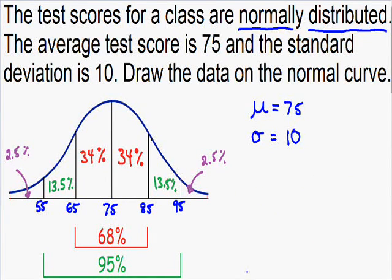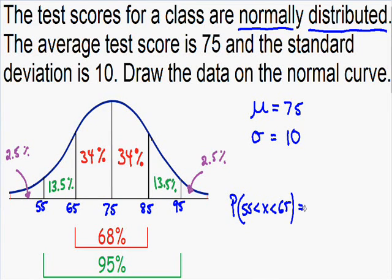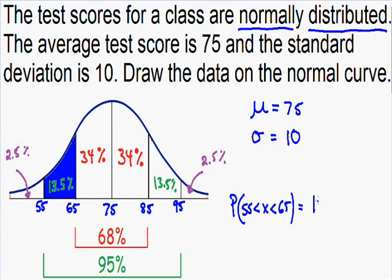Now let's find the probability that a student's test score is between 55 and 65. We just need to find the area between 55 and 65 on the curve. That area is 13.5% of the total area, so the probability of a student scoring between 55 and 65 is 13.5%.